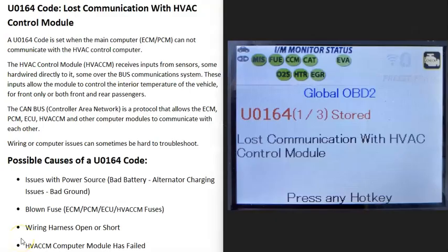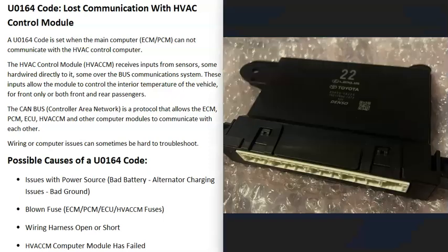Today I'm talking about a U0164 code — what it is and how you go about fixing it. A U0164 code means lost communication with the HVAC control module.